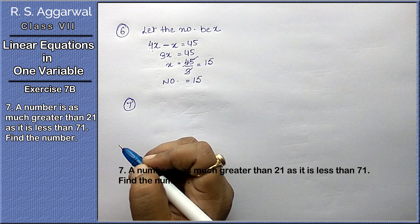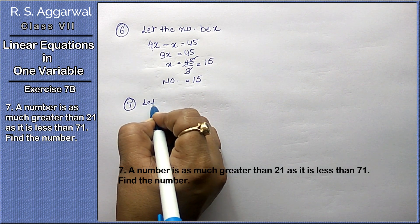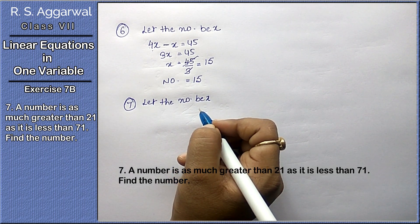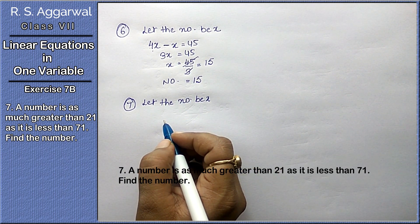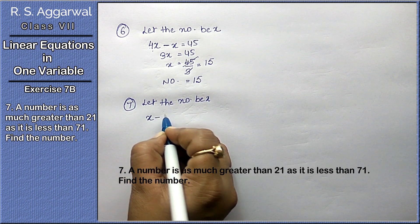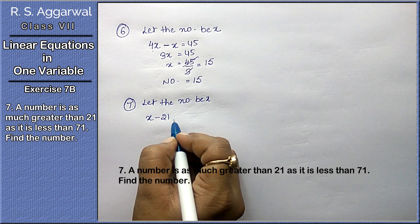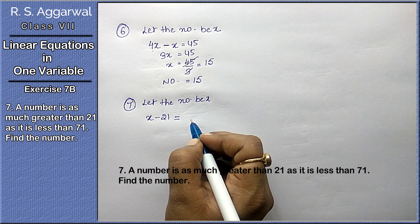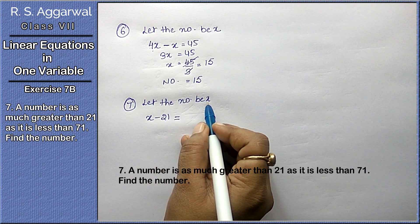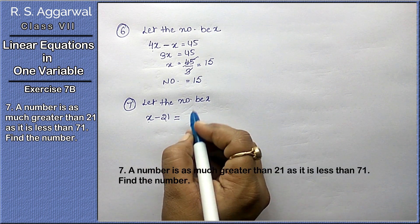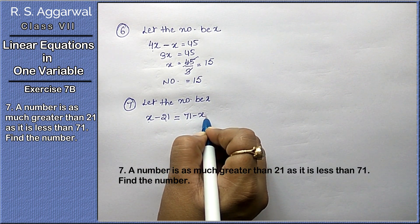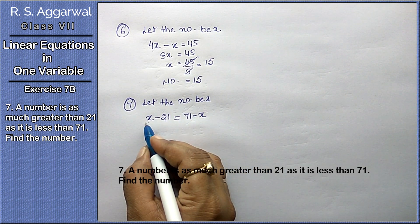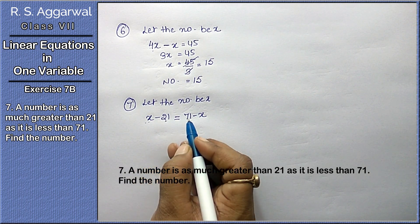Question 7: A number is as much greater than 21 as it is less than 71. Find the number. Let the number be x. This number is greater than 21 by the same amount as it is less than 71, so x minus 21 equals 71 minus x.